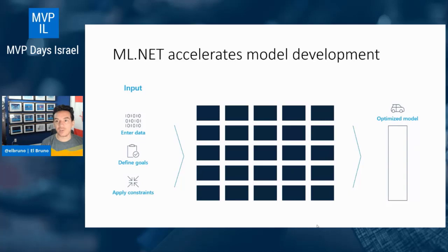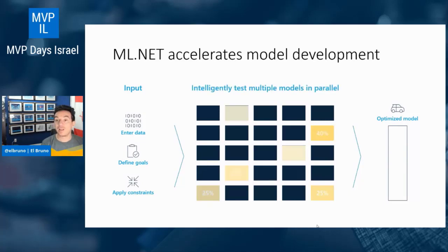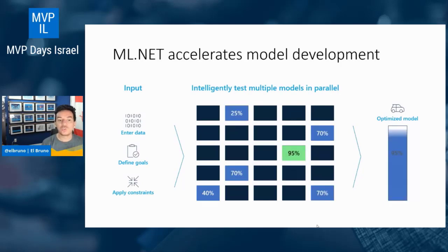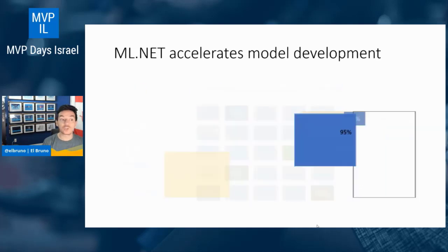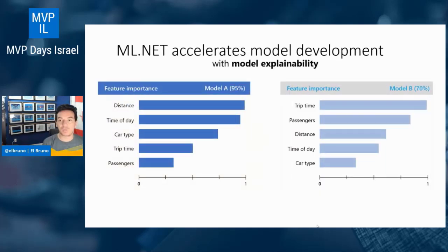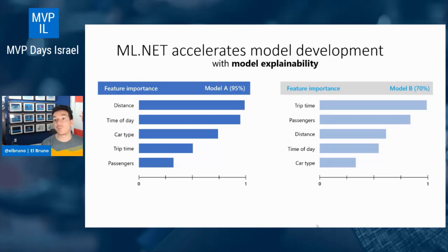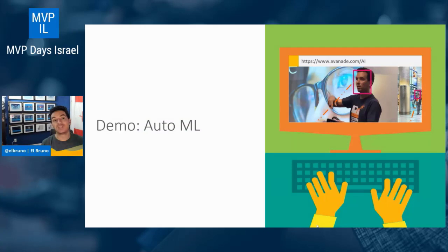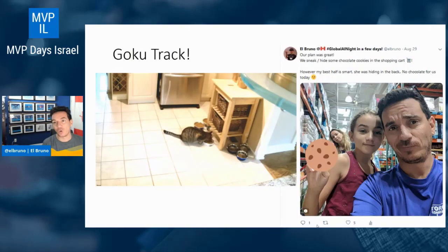AutoML runs the ABCs automatically — it trains models, tries different algorithms and parameters, and gives you the best one. It also tells you which features mattered most: in model A, time of day might be the most important feature; in model B, maybe distance. As a developer, it's up to us to decide how to use this. At the end of the day, I created a model to do image recognition to detect the cat. ML.NET is available on Mac, Windows, and Linux. It's very stable and very powerful.